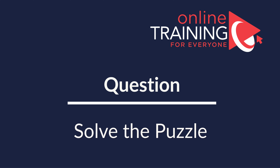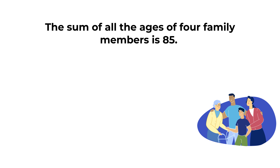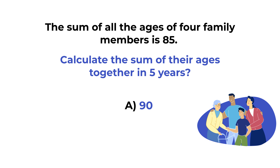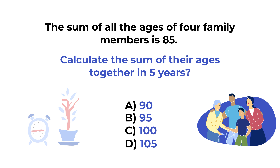Here's the puzzling question that you might frequently see on the test. The sum of all the ages of 4 family members is 85. What would be the sum of all ages together in 5 years? You're presented with 4 choices: Choice A 90, Choice B 95, Choice C 100, and Choice D 105. Give yourself 20 to 30 seconds to see if you can come up with the solution. Let's move forward to get to the correct solution together.